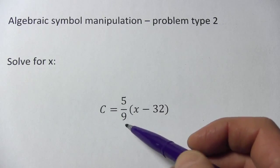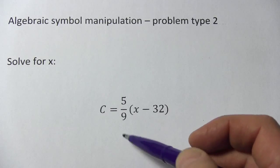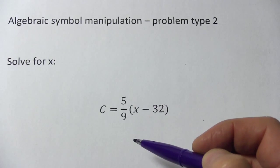Well, your first impulse might be to distribute this 5 ninths, but I don't think that's the most productive way to go about this. I'd rather just get rid of that 5 ninths entirely.